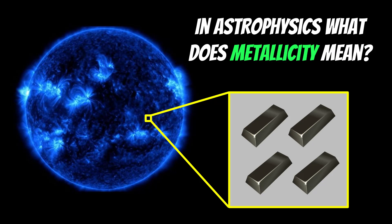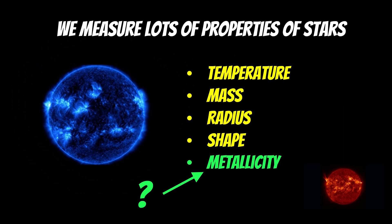In astrophysics we have this term called metallicity. What I want to do is have a look at what that is, how we calculate it, and why it's particularly useful to know what an object's metallicity actually is. So let's use stars as an example. There are a variety of different properties we can measure: temperature, mass, radius, even the shape, and also the metallicity. We're going to look at what that means for the star and what else we can learn from it.